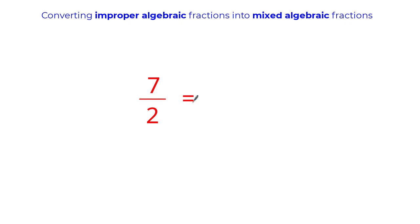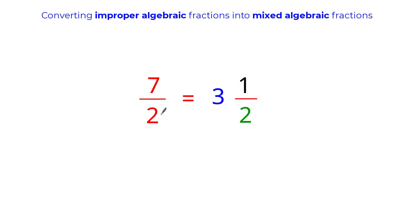Let's have a look at an example using an improper fraction with numbers. It's improper because the numerator is greater than the denominator. You should know that converting 7/2 into a mixed fraction gives us 3 and a half. We get the 3 because we need to multiply 2 by 3 to get as close as we can to 7, which gives us 6 with a remainder of 1, and we get the 2 because we're dividing by 2.